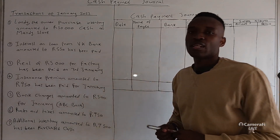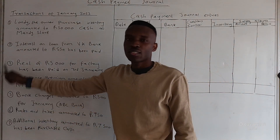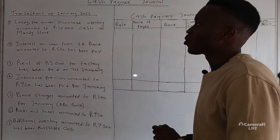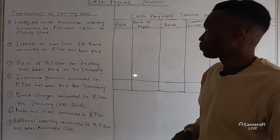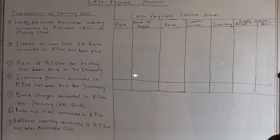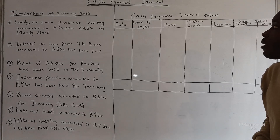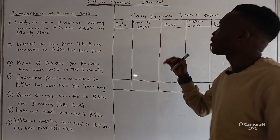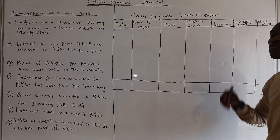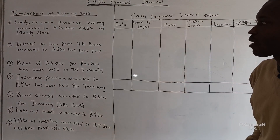All the transactions we are going to read are for January 2023, so we will use that as our date. Looking at the cash payment journal entry, the first column is date, the second column is name of payee, then we have bank, creditors control, and inventory. If we find that a transaction is not affected by creditors control or inventory, we record it under a sundry account and indicate the detail as well as the amount.